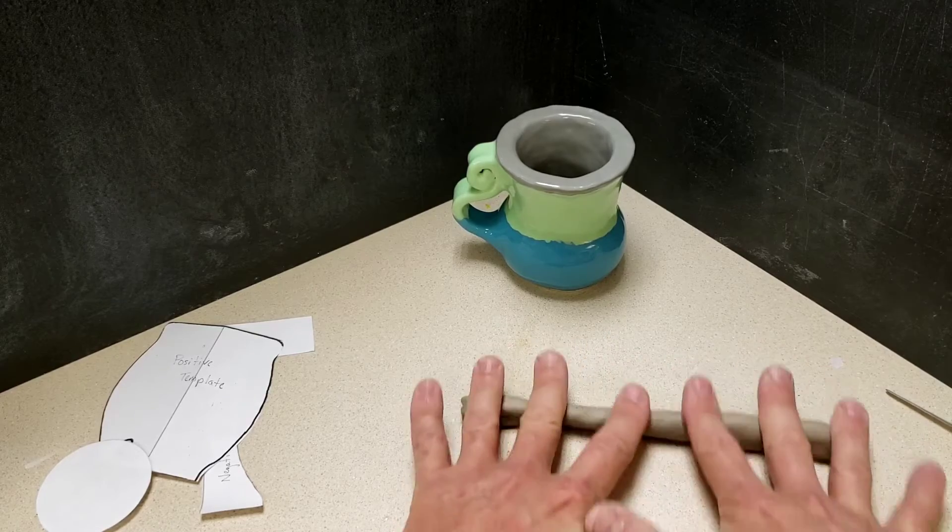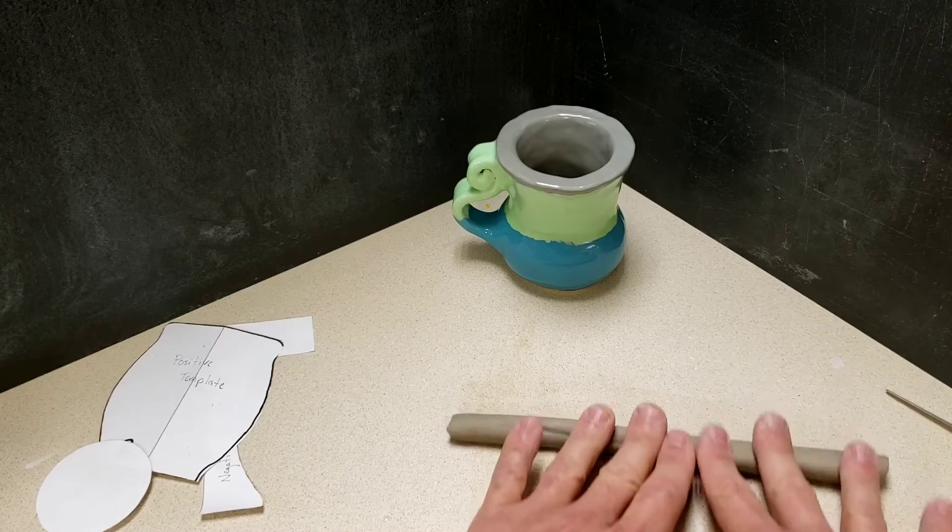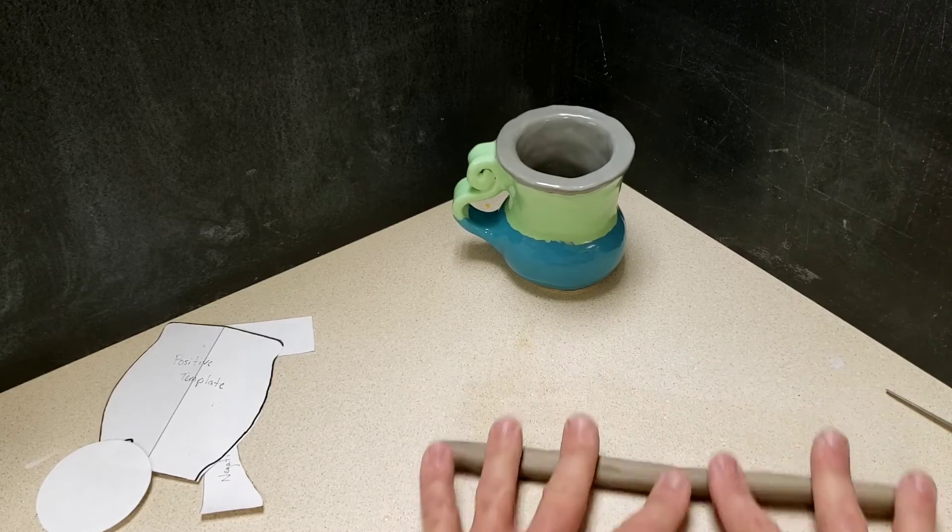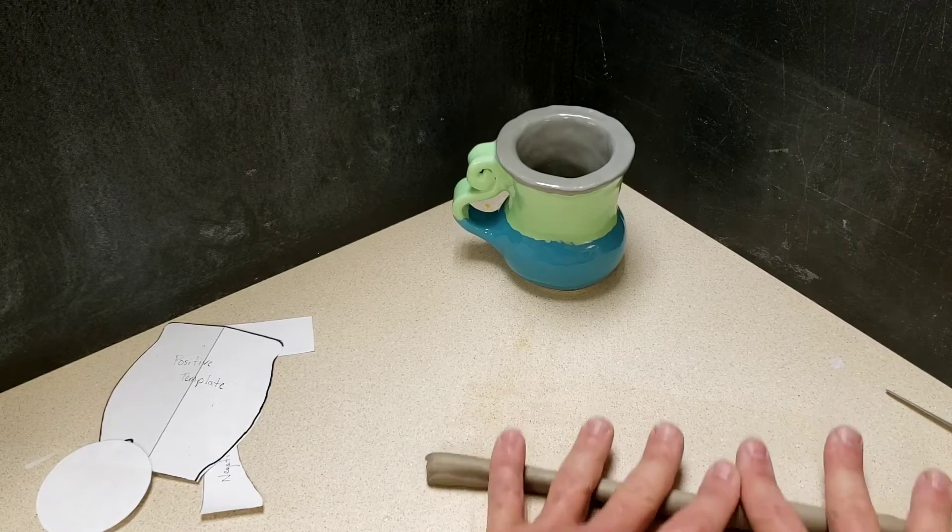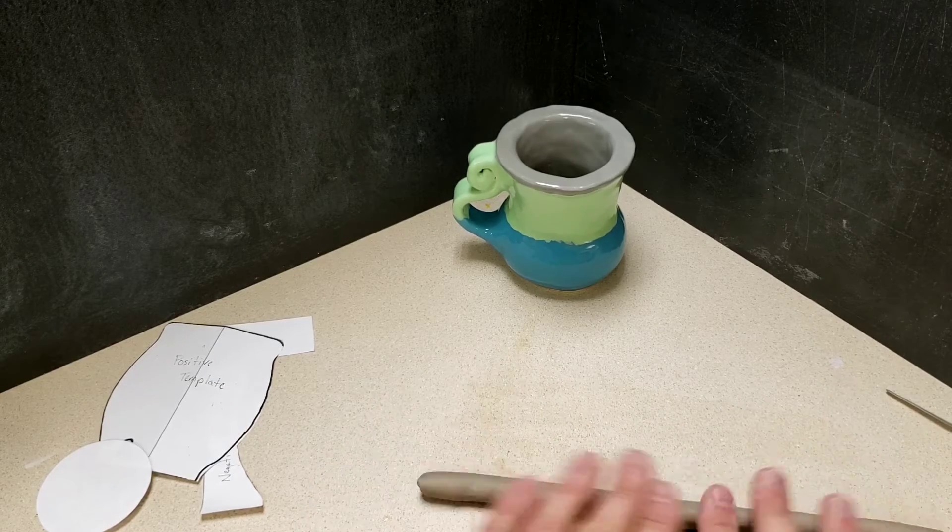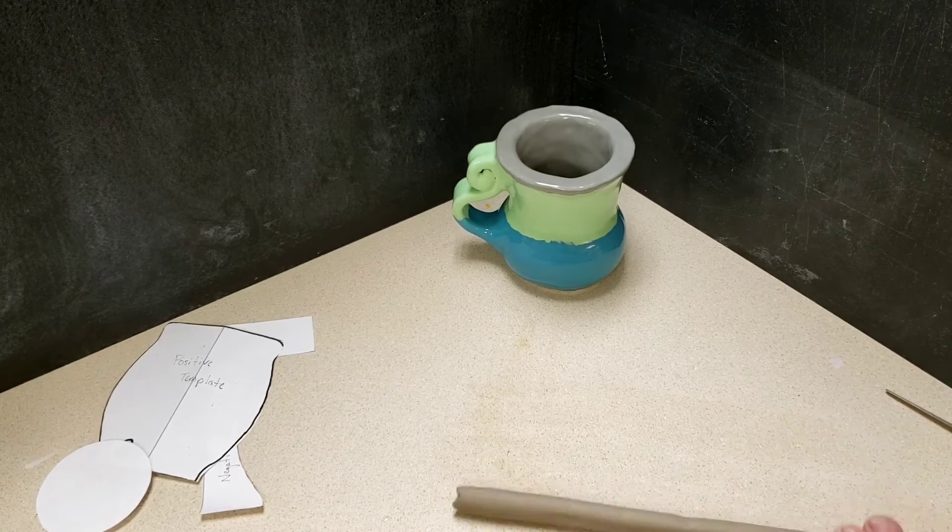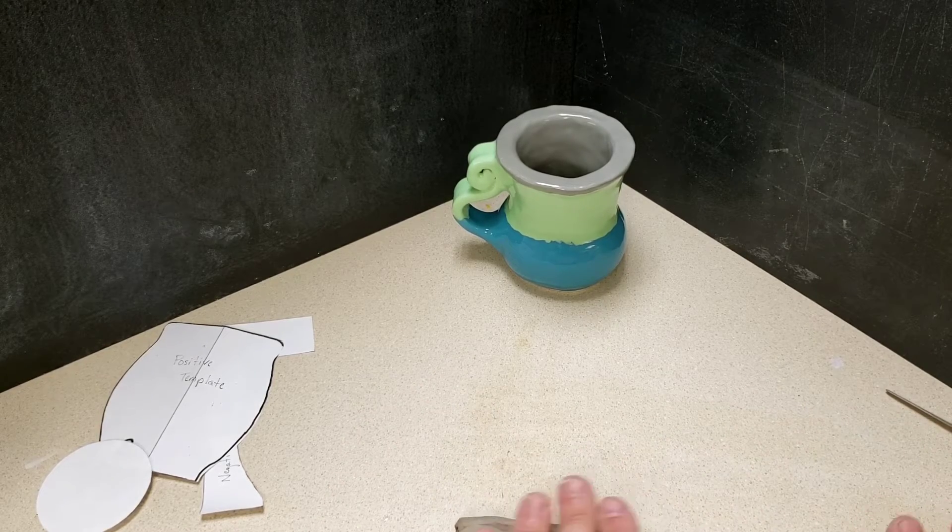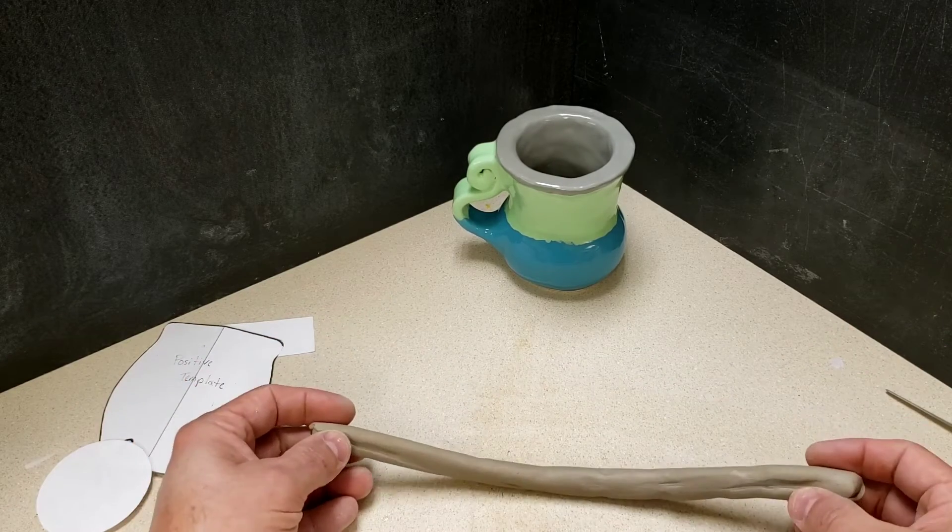What I'm looking for is a coil that is a little bit less than a half an inch. That's kind of a common theme as we're rolling these out. As we blend them together they'll thin out a little bit as we build our walls, so I want to start with them a little bit thicker. So there's my coil. You can see it's generally the same thickness all over.